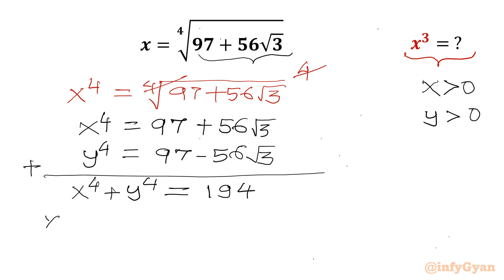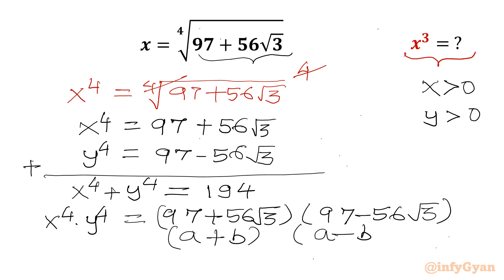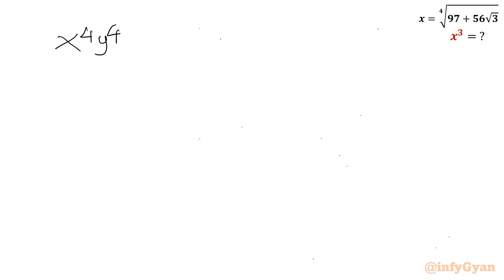Now let's consider the product of x power 4 with y power 4. I can write (97 plus 56 root 3) times (97 minus 56 root 3). In the first bracket it is a plus b, second bracket a minus b, so we can use the difference of two squares identity: a squared minus b squared. So x power 4 times y power 4 equals 97 whole square minus (56 root 3) whole square.